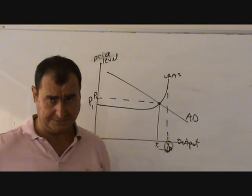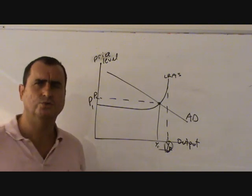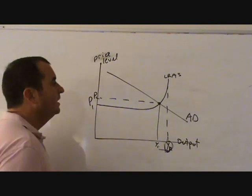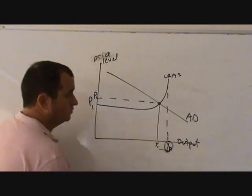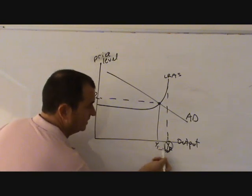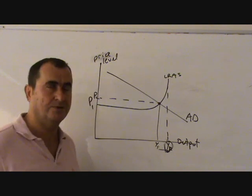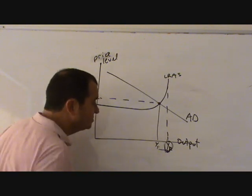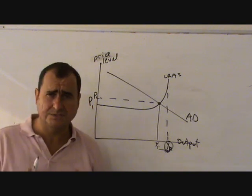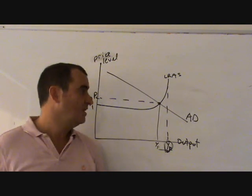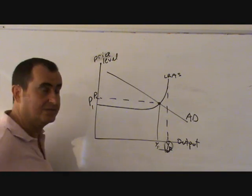Ceteris paribus, that means all other things being equal, what would it want to do with its fiscal policy? Perhaps this government is worried that output is below the full employment level. That must mean unemployment or underemployment. So to solve that unemployment, if that's important to that government, they will want to boost aggregate demand.